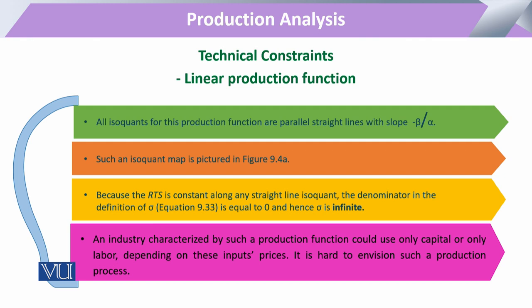Since the rate of technical substitution is constant along the straight line, and since the rate of technical substitution is the main factor through which we calculate the elasticity of substitution — when we calculate elasticity of substitution, the denominator in this production function comes out to be zero. So when that constant is divided by zero, the result is infinity.